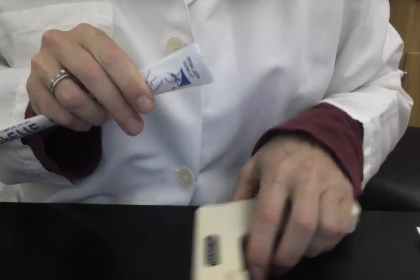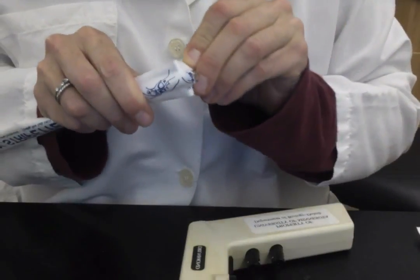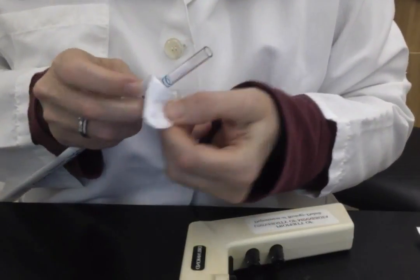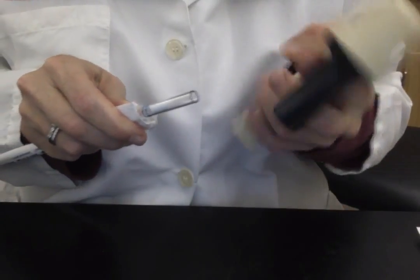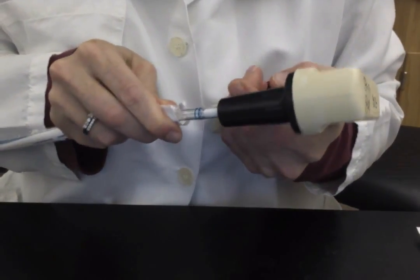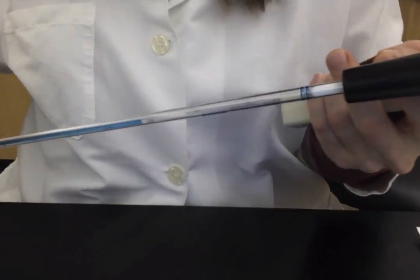When you open the pipette, you want to carefully press through the paper side, peel back, maintaining sterile technique, and then use some elbow grease to drive that pipette into the housing.